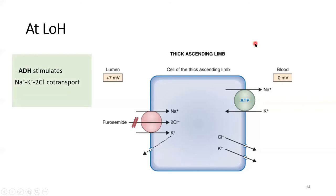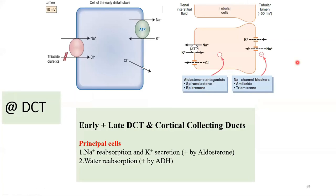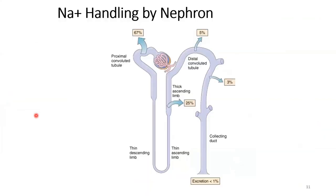We now move to the DCT — the distal convoluted tubule — where sodium is reabsorbed variably under the influence of aldosterone. The presence or absence of aldosterone makes all the difference. Aldosterone is under the influence of angiotensin 2. This is where we are in the nephron: the DCT segment which then goes into the collecting duct.